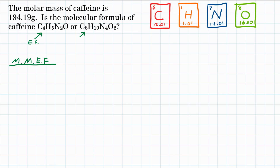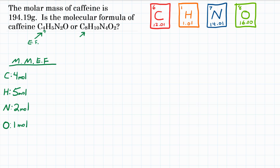For our molar mass, in caffeine we have carbon, hydrogen, nitrogen, and oxygen. Looking at our empirical formula, if we had one mole of C4H5N2O, that would be four moles of carbon because it has a subscript four. For hydrogen, we'd have five moles; for nitrogen, two moles; and for oxygen, one mole. That's how many moles we would have of each element.